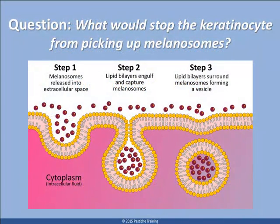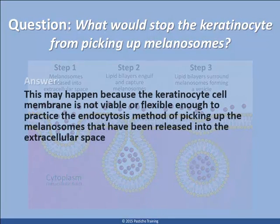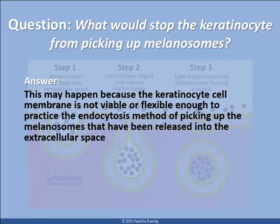Question: what would stop the keratinocyte from picking up melanosomes? Answer: this may happen because the keratinocyte cell membrane is not viable or flexible enough to practice the endocytosis method of picking up the melanosomes that have been released into the extracellular space.